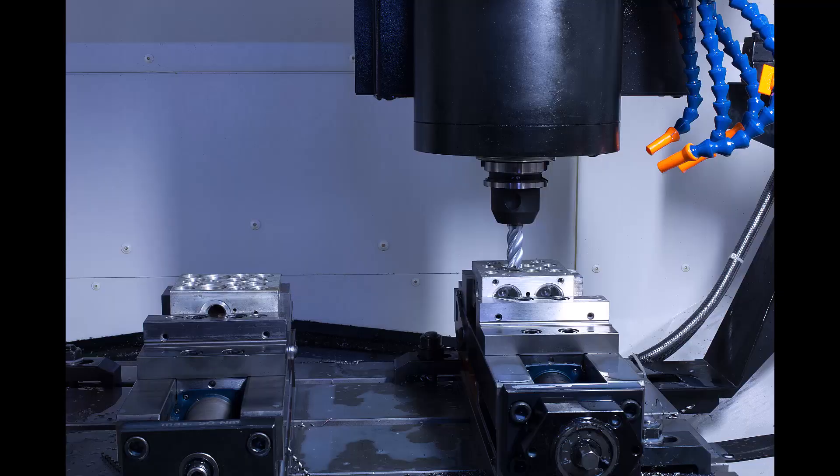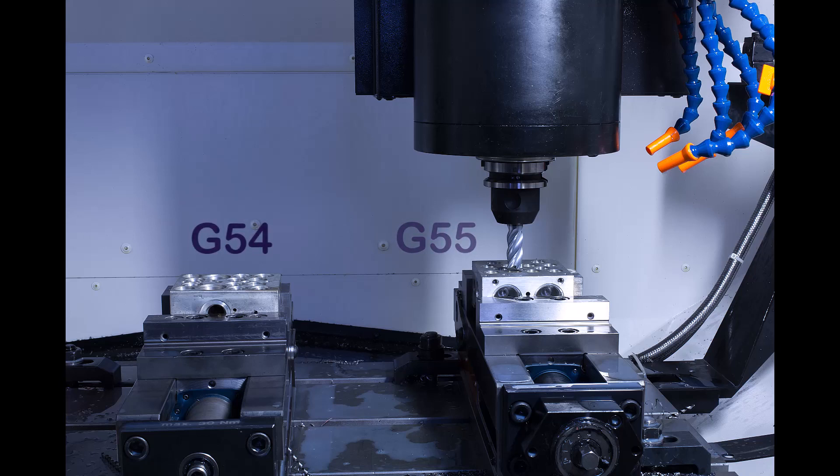Let's say you're using a CNC mill and you've set up two different vices. You could use G-54 for the first vice and G-55 for the second. Once these offsets are established, the machine will remember them until they are reset.